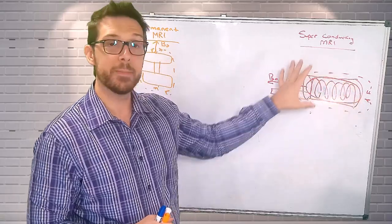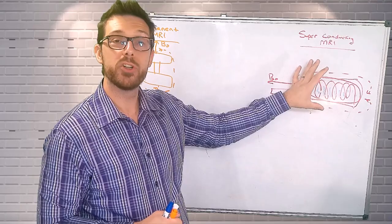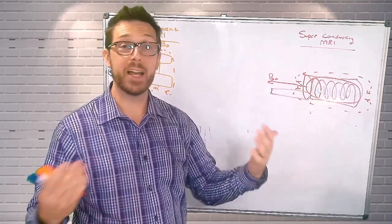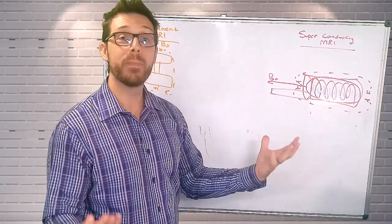We have this system now that is contained. These coils of wire are submerged in this cryogen, liquid helium, and we can reach these high field strengths. We charge it up to 1.5 Tesla, 3 Tesla, 7 Tesla, and it remains there.